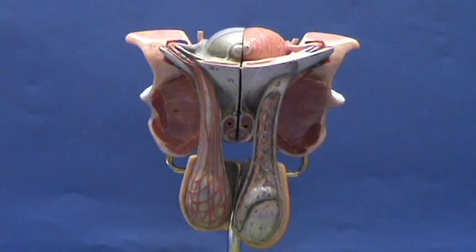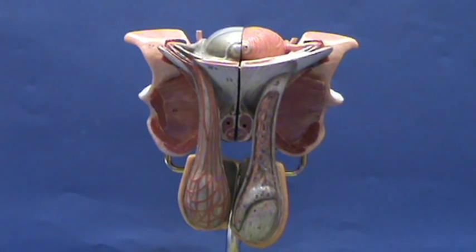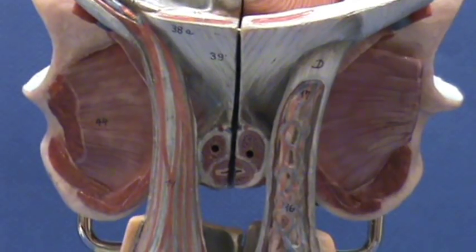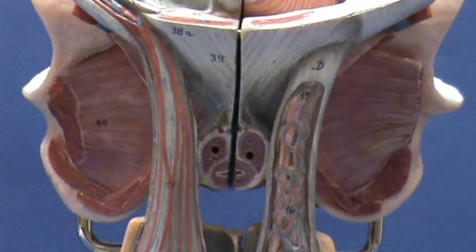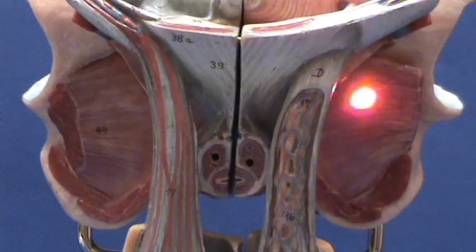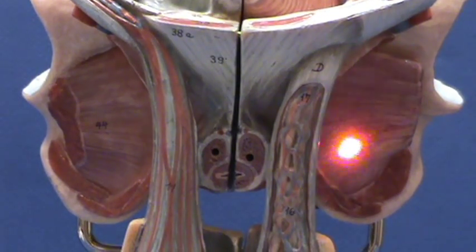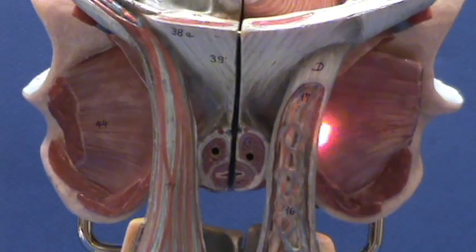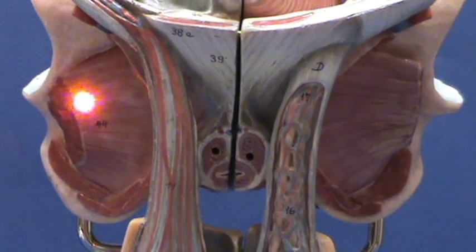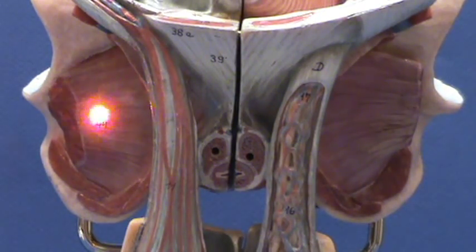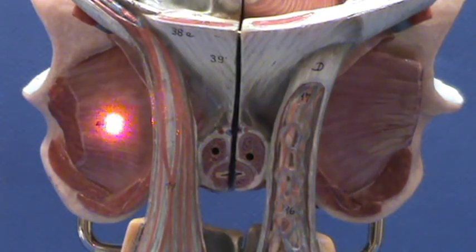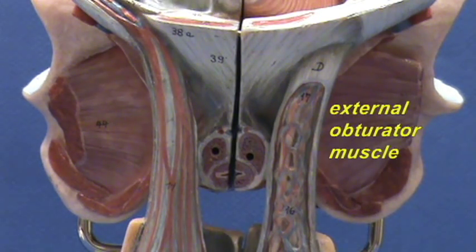One non-reproductive structure, which you can easily see on this model, is a muscle — a skeletal muscle — which covers the obturator foramen because it attaches to the obturator membrane and to the bone that surrounds the obturator membrane. The fibers of this muscle then insert on the medial side of the greater trochanter of the femur. This muscle, which you can see on either side, is the external obturator muscle and it is a lateral rotator of the thigh at the hip joint.